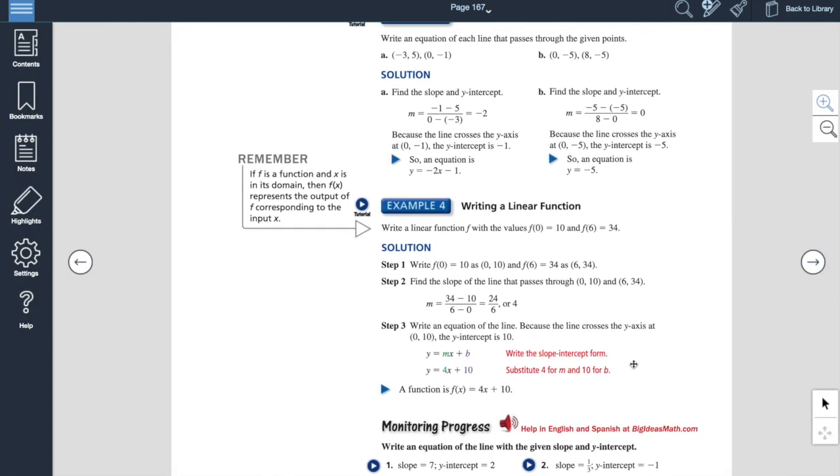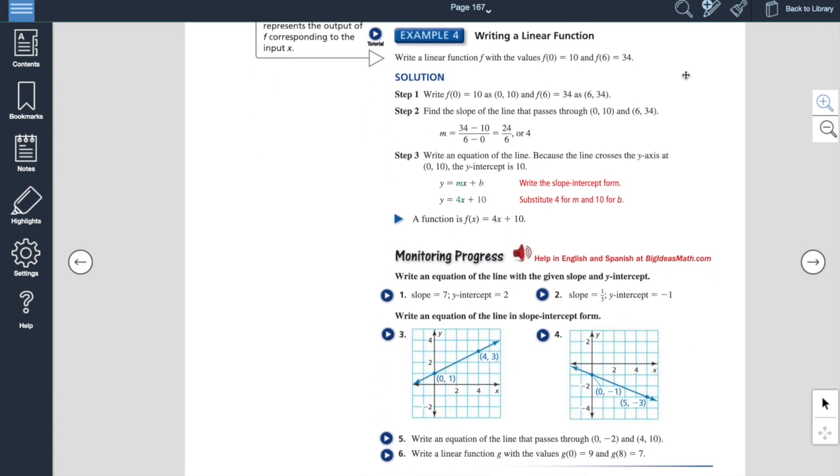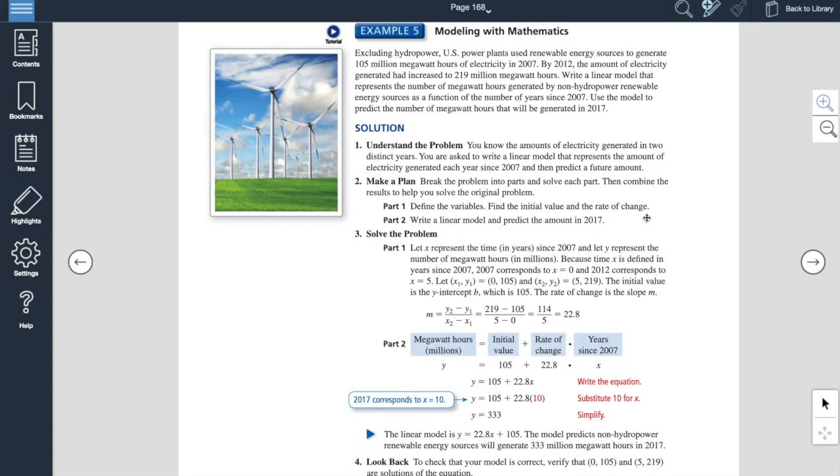Here, remember to find slope. Change in y over change in x. So here we find the slope, negative 1 subtract 5, that's your change in y. Divided by 0, subtract a negative 3, that's your change in x. Change in y, change in x. Slope, rate of change. All right. Then it gives you guys some more problems here with your monitoring progress. Again, check those out. Shouldn't be a problem.